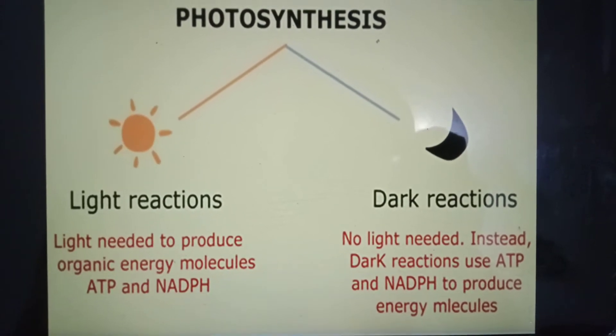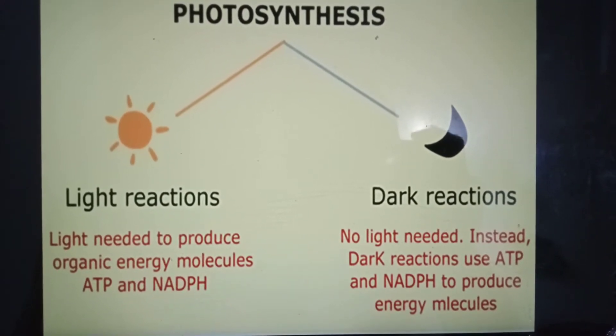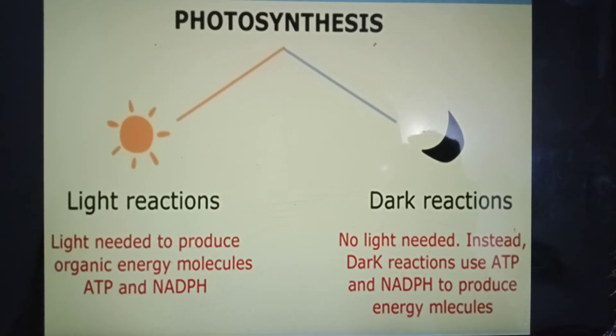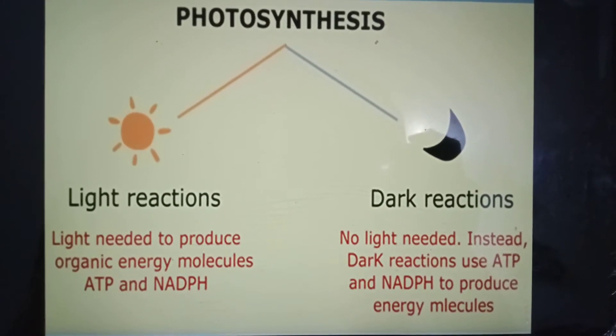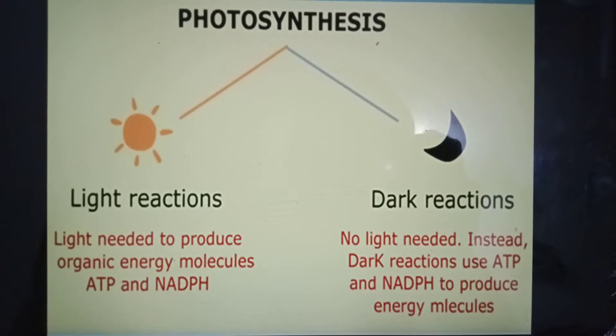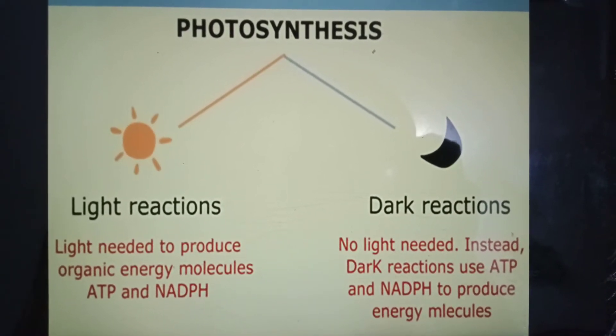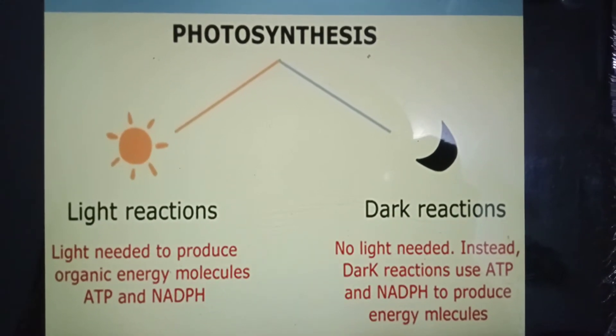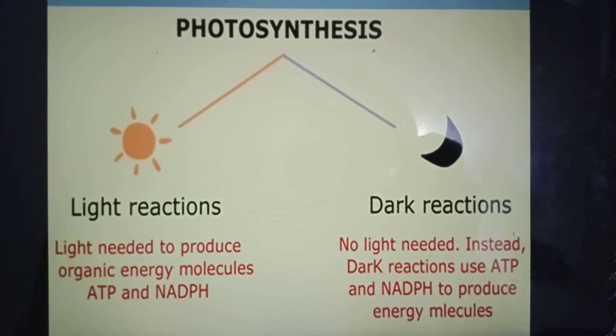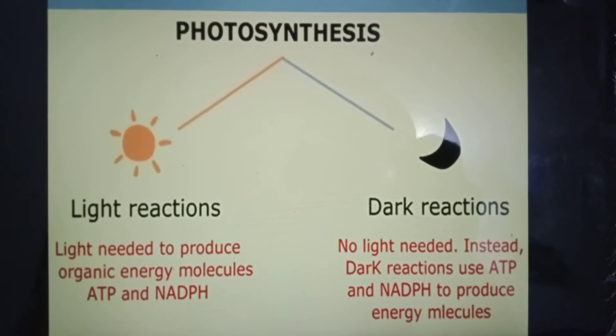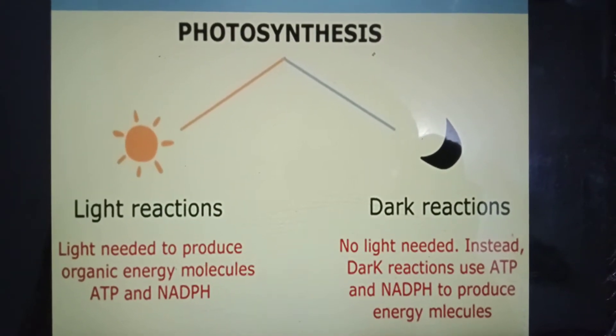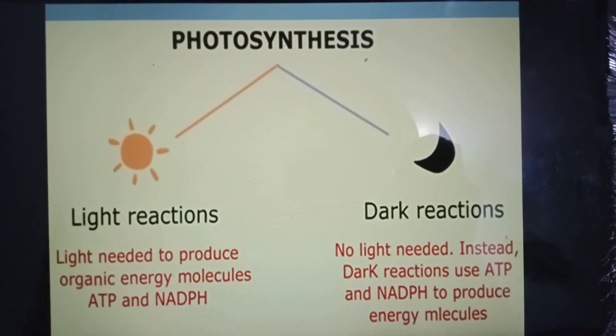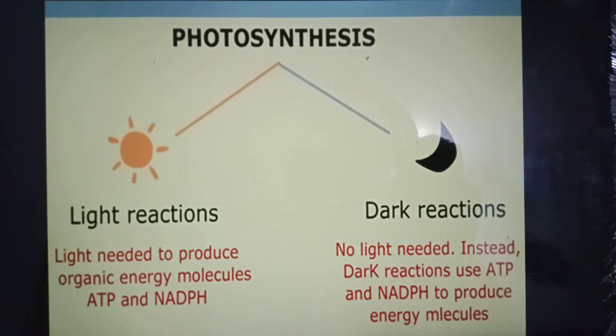Photosynthesis occurs in two phases: light reactions and dark reactions. In light reactions, light is needed to produce organic energy molecules ATP and NADPH. In dark reactions, no light is needed. Instead, dark reactions use ATP and NADPH to produce energy molecules.